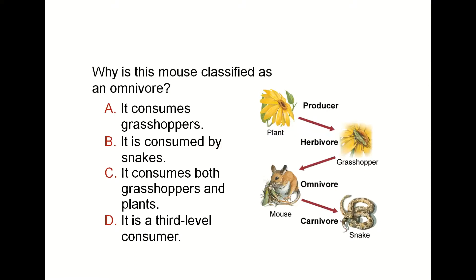This figure shows a food chain. Why is the mouse classified as an omnivore? The mouse appears to be a carnivore because it feeds on a grasshopper, but it is an omnivore because it also feeds on plants — cereals and grains. Omnivore means feeding on both plants and animals. Herbivore means eating plants only, and carnivore means feeding on other animals only.